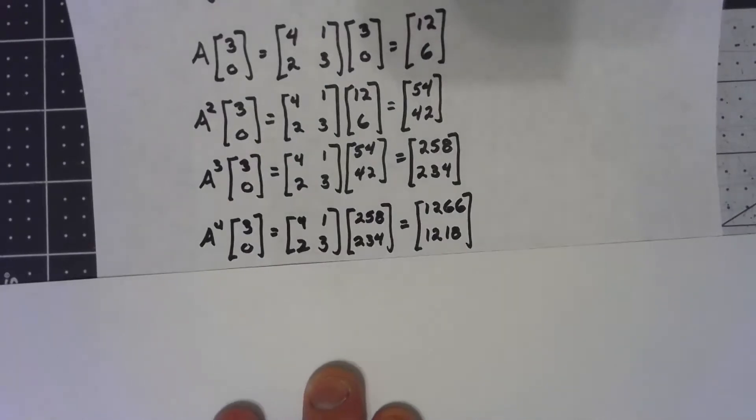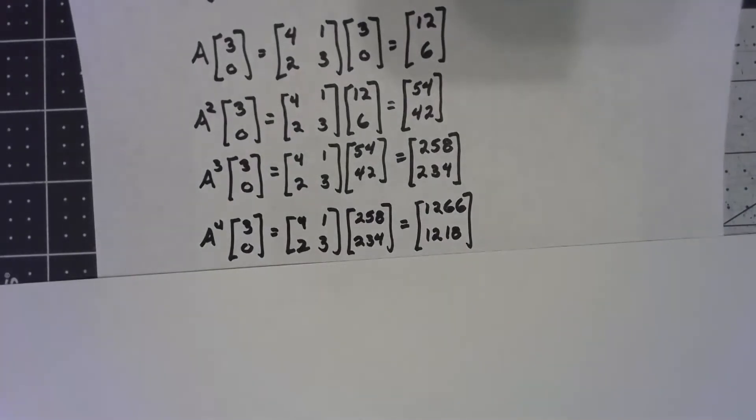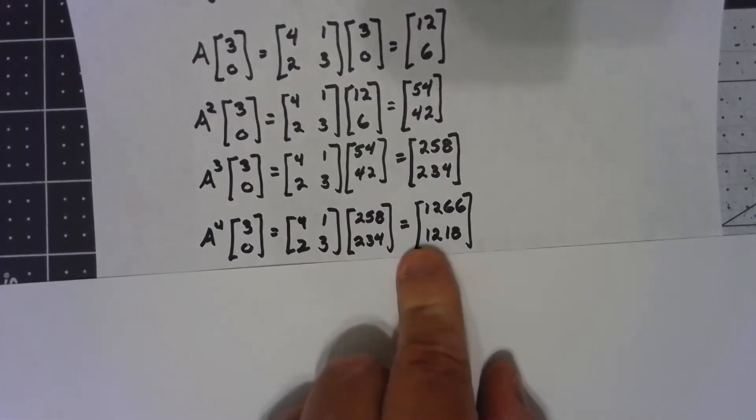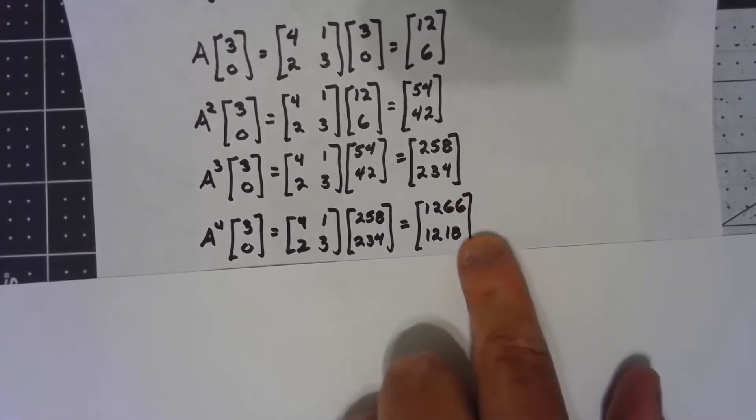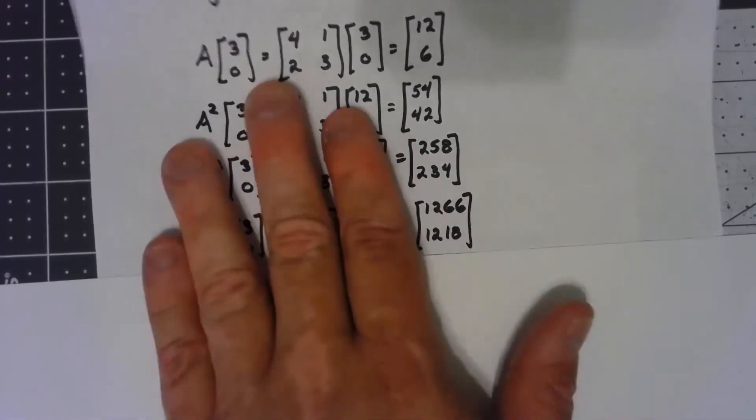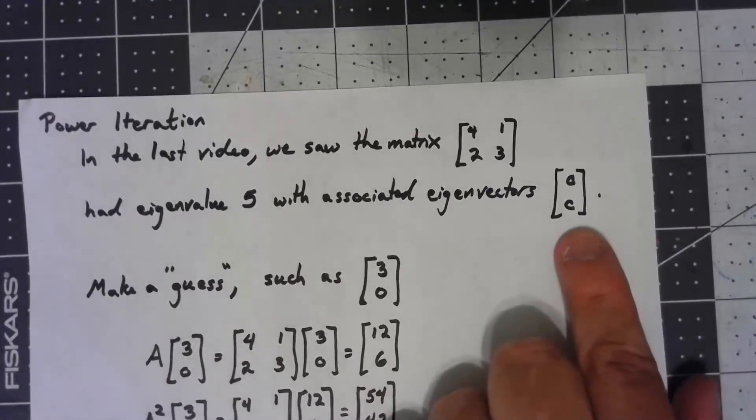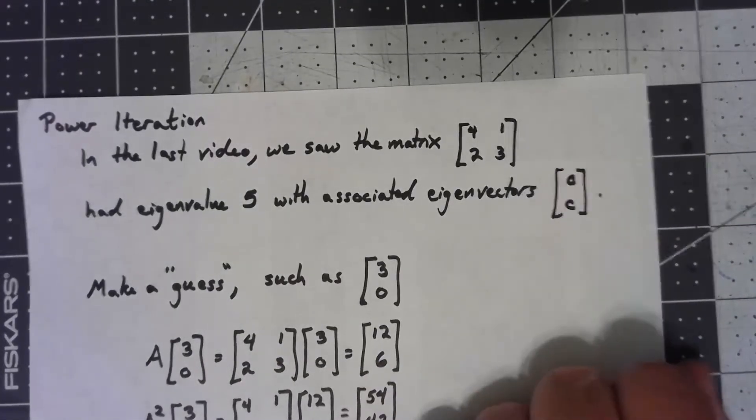And notice that what's happening as we go on, these entries are getting closer and closer together, not in an absolute sense, but in a relative sense. The percentage difference between these things is getting smaller and smaller. We're approaching something of the form a constant over a constant.